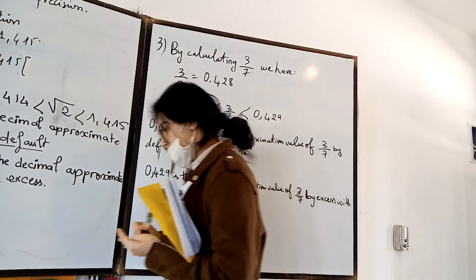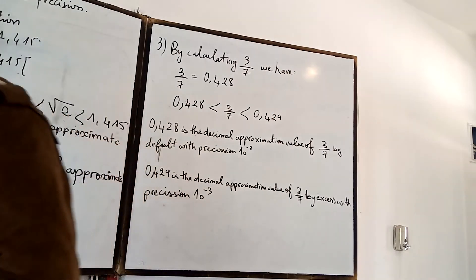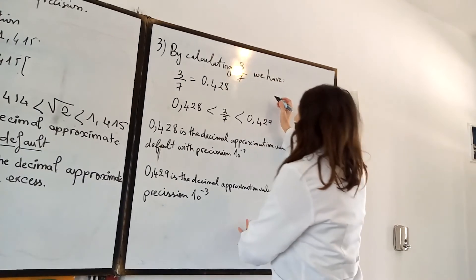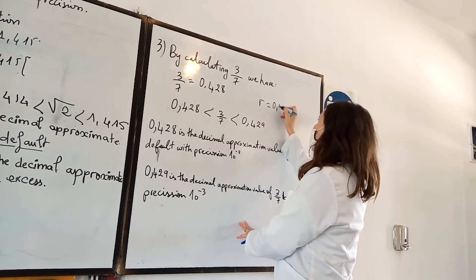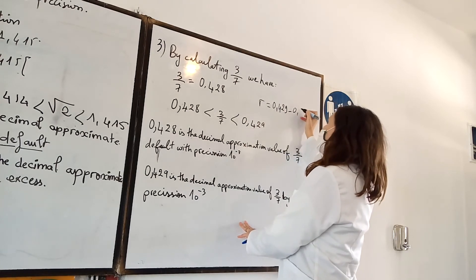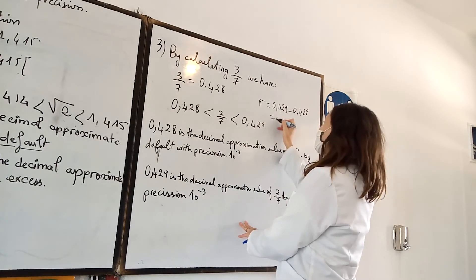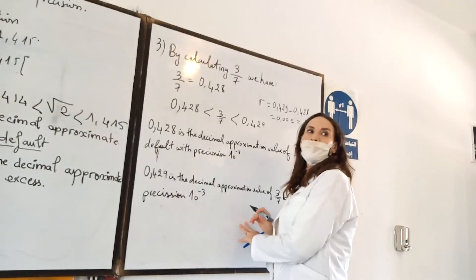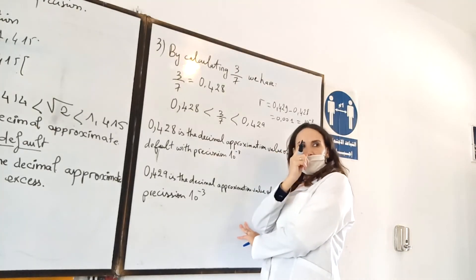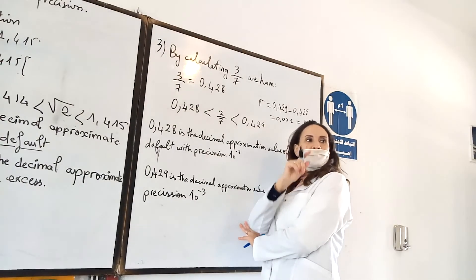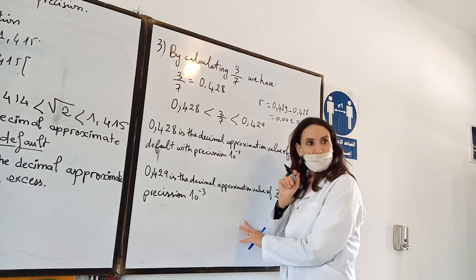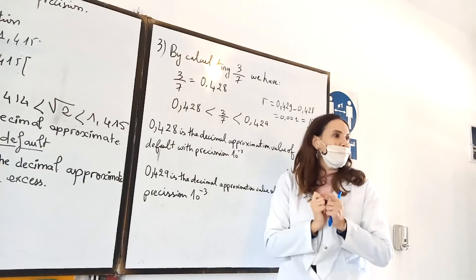The precision is the difference between number B and A. For example, the precision r is 0.429 minus 0.428 equals 0.001, which is like 10 power minus 3. If we have two digits after the decimal point, the precision is 10 power minus 2. If we have one digit after the decimal point, it is 10 power minus 1, which is 0.1. So precision can be 0.1, 0.01, or 0.001. It is very clear.